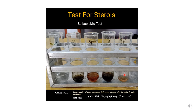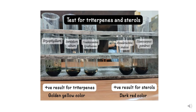In the sterol test, positive results — indicated by red color — are seen in aloe vera (last tube) and spider lily (third tube). These two plants, spider lily and aloe vera, show a positive sterol test. This comparison of different tests across different plants is clearly visible in the image.